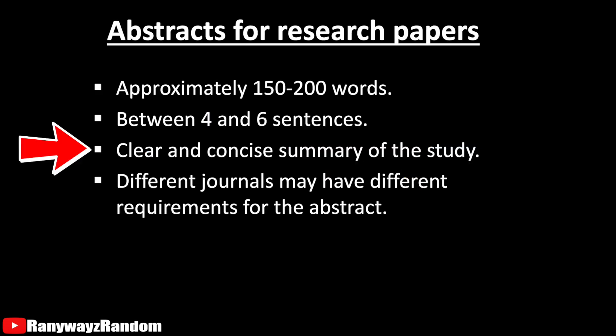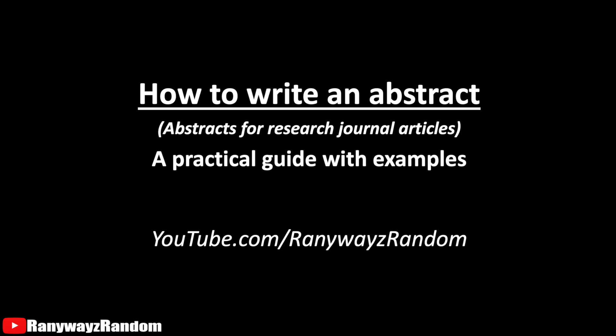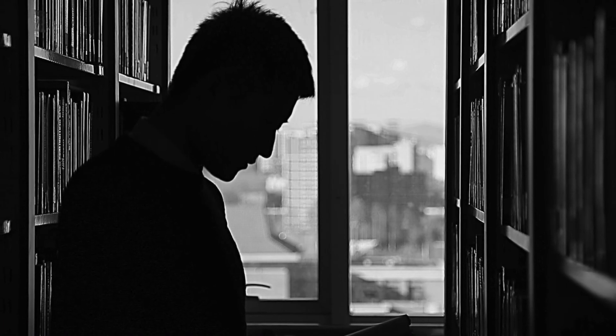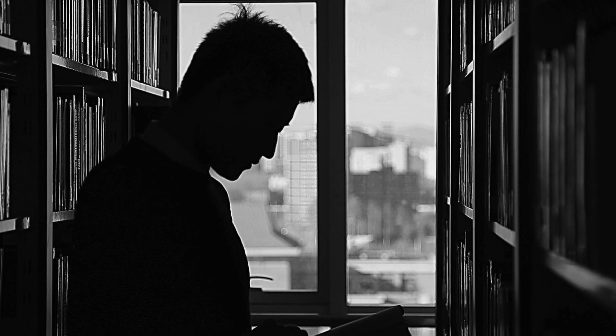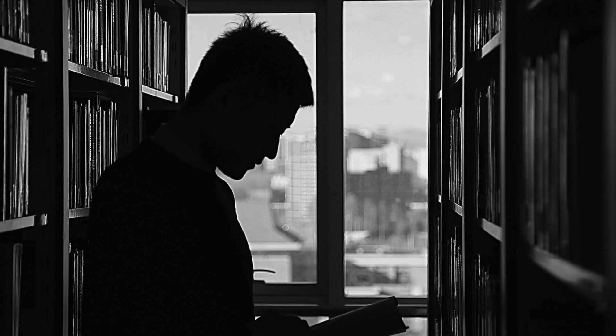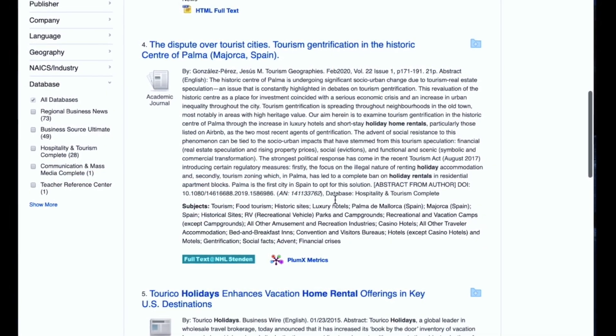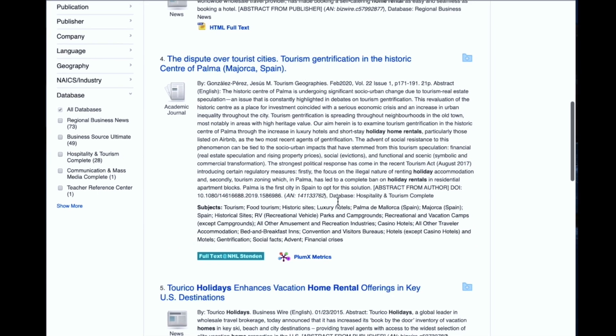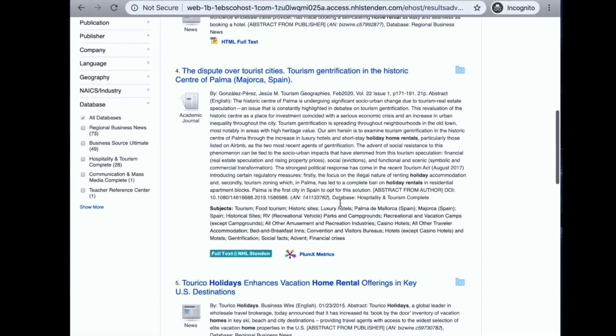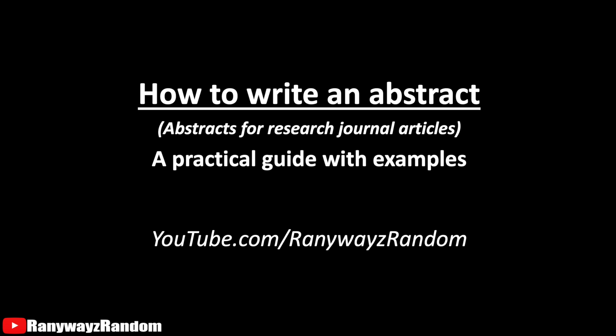The abstract still needs to be a summary of the study in very clear and concise language, and it must be carefully written. When reading a research journal, readers first read the abstract to decide whether the study is relevant or interesting enough to read in full. When grading a student's thesis, an instructor reads the abstract first to quickly understand what the research is about. When browsing academic databases, researchers read abstracts to identify which studies are useful for their own work. This shows how important the abstract is, and why it should be written properly and carefully.